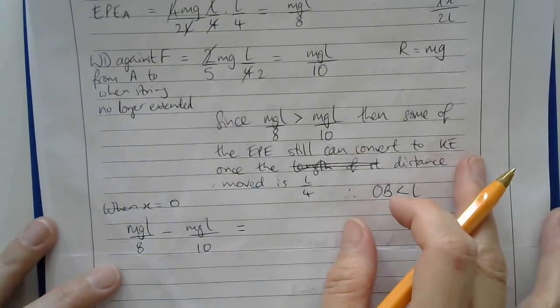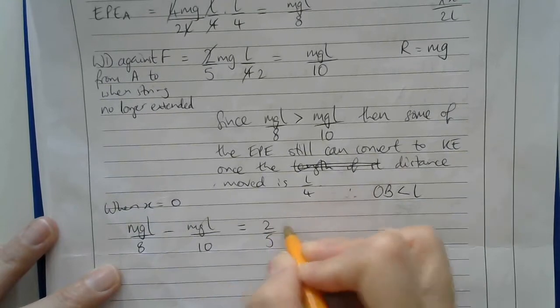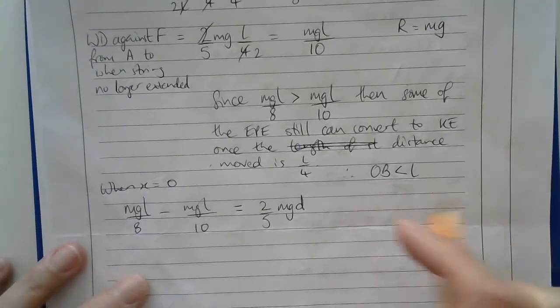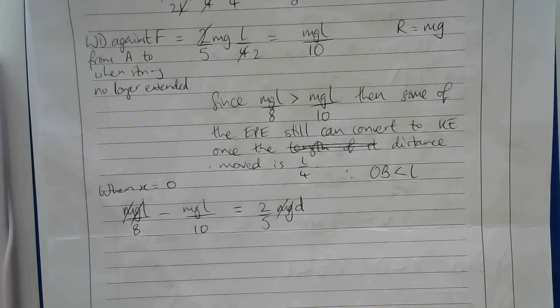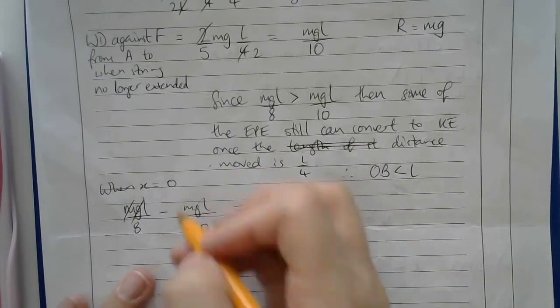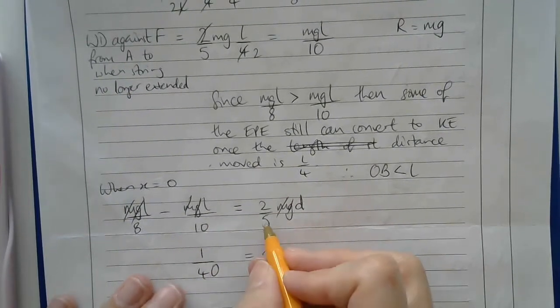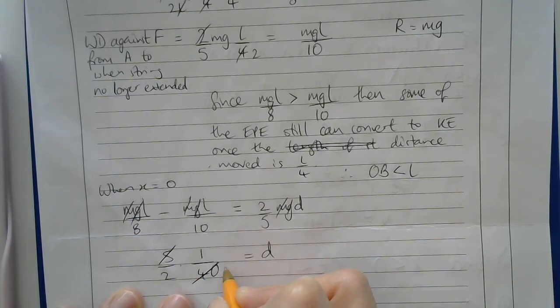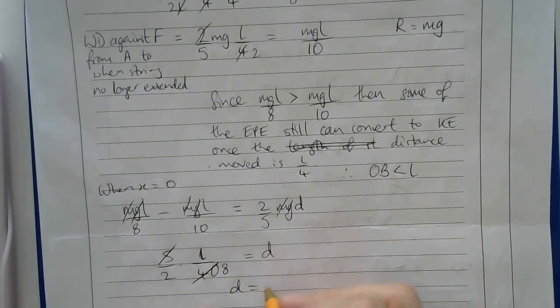The work done against friction is the frictional force, which is 2 fifths mg, times by the distance moved, which I'll call D. I can see that I've got mg everywhere. If I do 1 eighth take away 1 tenth, then I get 1 fortieth. So I've got here 1 over 40. To get D, I can times by 5 and divide by 2. That will cancel and give me 8. I'll get that D is L over 16.